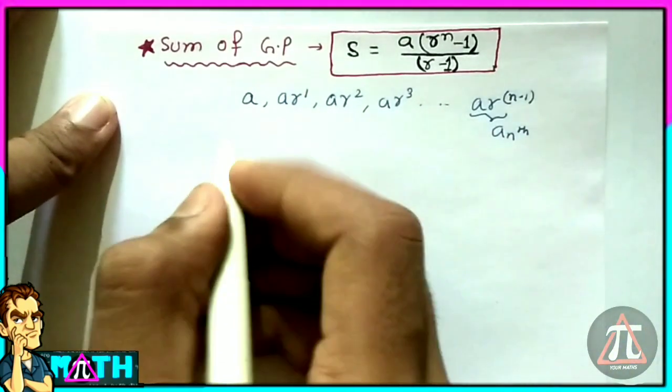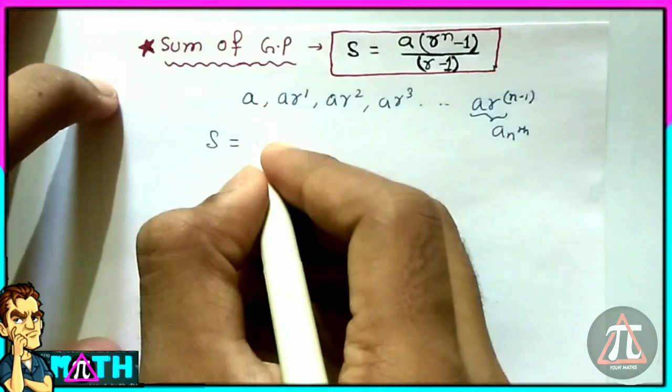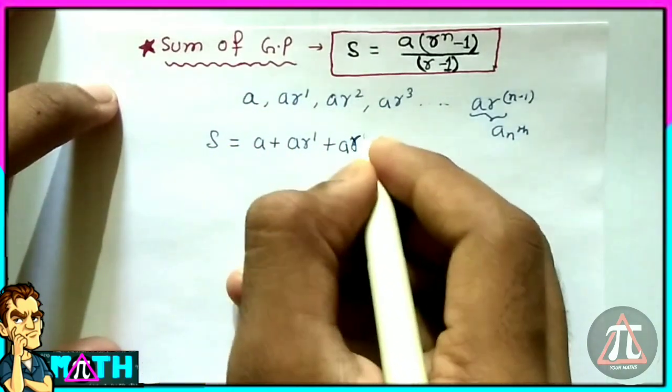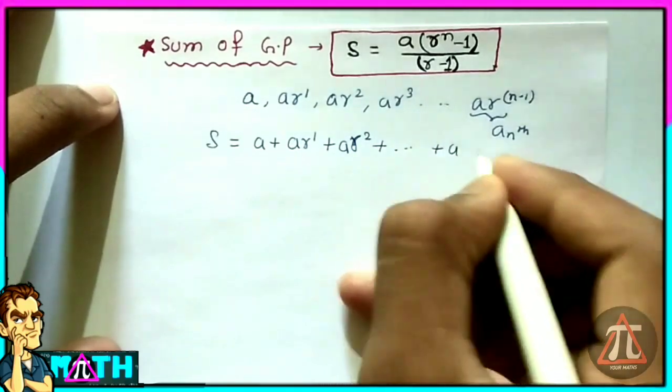Now let's prove the sum formula of the GP. The sum of the GP can be written as S = a + ar to the power 1 + ar to the power 2 till ar to the power (n-1).